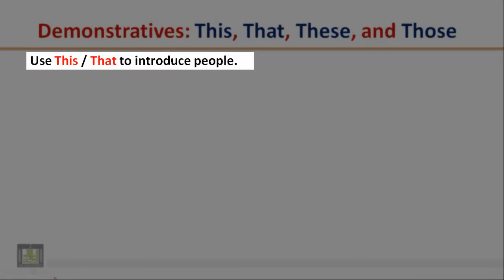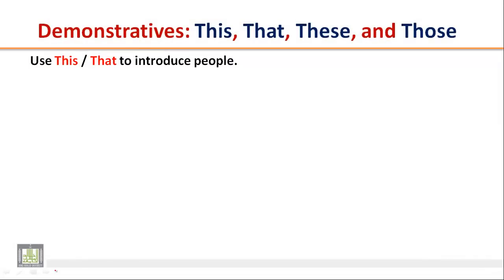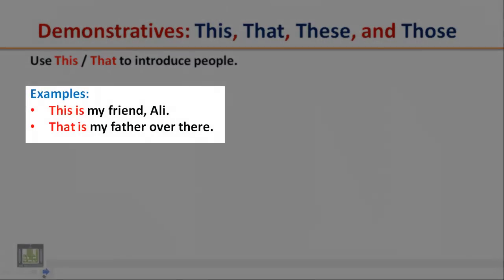Use this and that to introduce people. Examples: This is my friend Ali. That is my father over there.